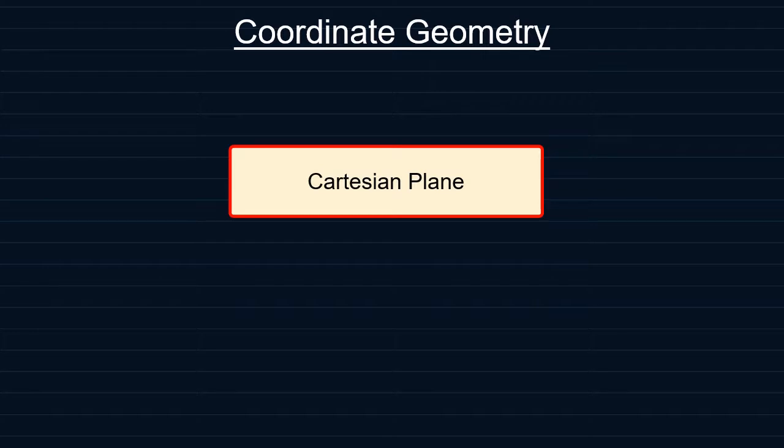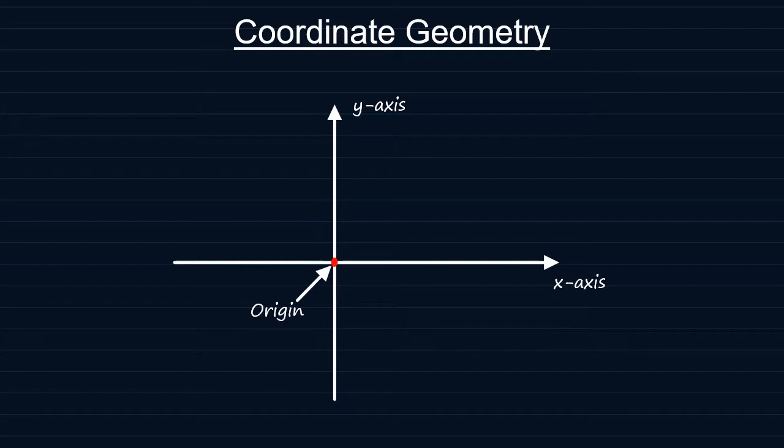The Cartesian plane is defined by two perpendicular lines, the horizontal x-axis and the y-axis which is vertical. The two axes meet at the origin or simply O.